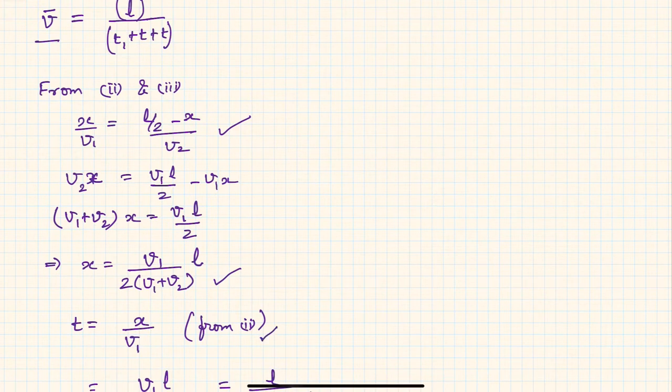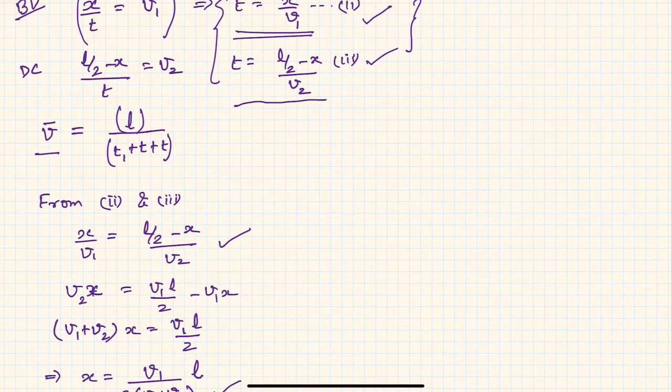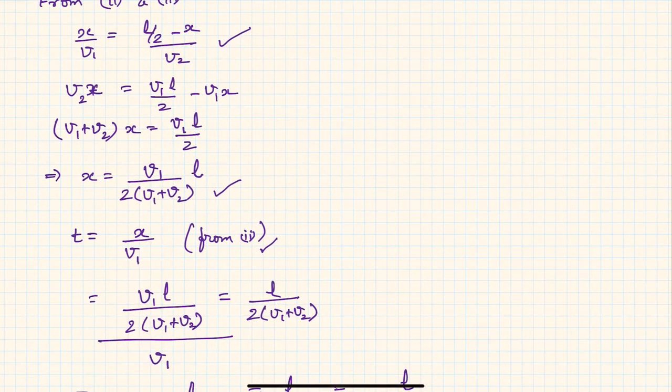From equation 2 we know that t equals x by v1. So t equals x by v1. Now you can put the value of x in this equation, so it becomes v1 l/2 times (v1 l upon 2 times (v1 + v2)) and then divide by v1. Upon simplification